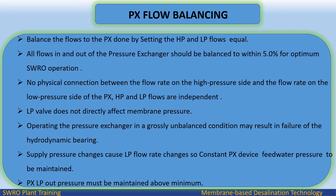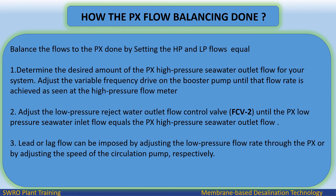PX flow balancing: balance the flows by setting HP and LP flows equal. Step 1: determine the desired PX high-pressure seawater outlet flow, then adjust the variable frequency drive on the booster pump until that flow rate is achieved at the high-pressure flow meter. Step 2: adjust the low-pressure reject water outlet flow control valve until the PX low-pressure seawater inlet flow equals the PX high-pressure seawater outlet flow. Lead or lag flow can be imposed by adjusting the low-pressure flow rate through the PX or by adjusting the speed of the circulation pump, respectively.